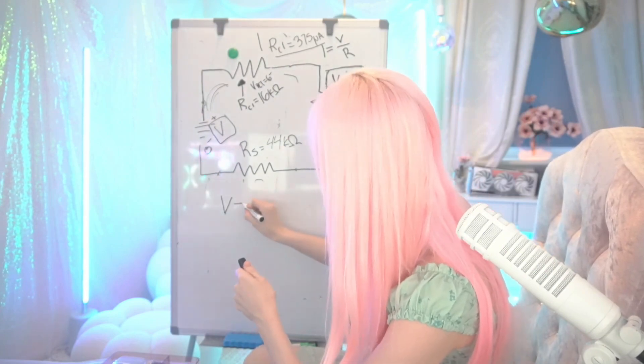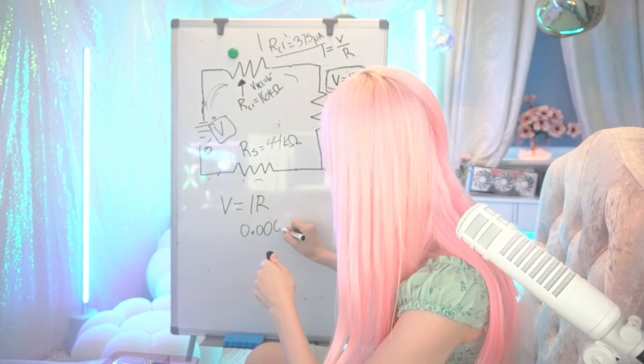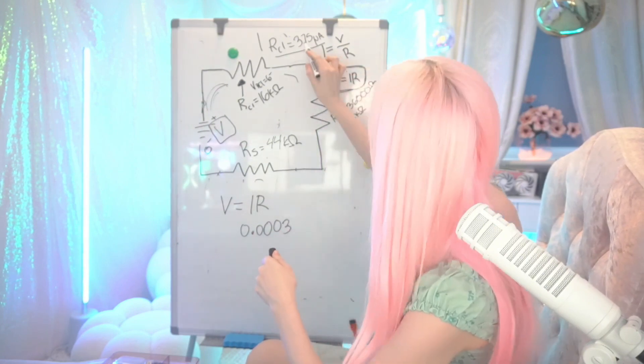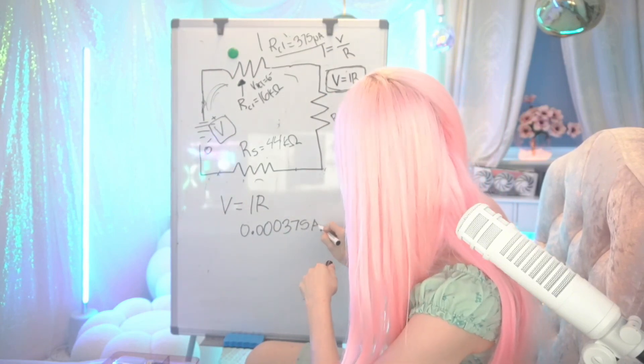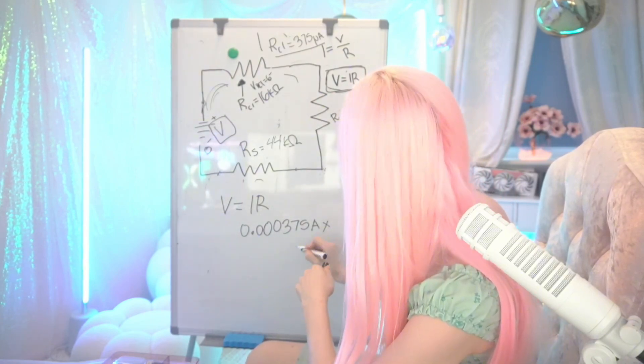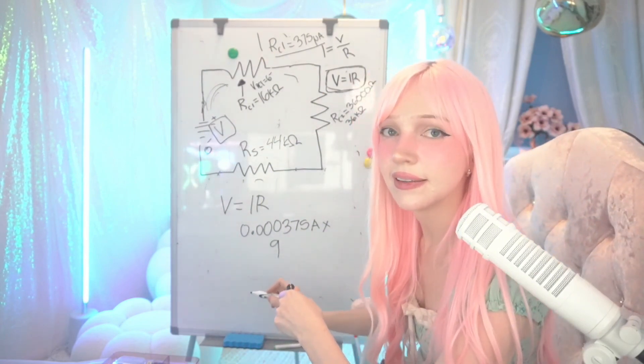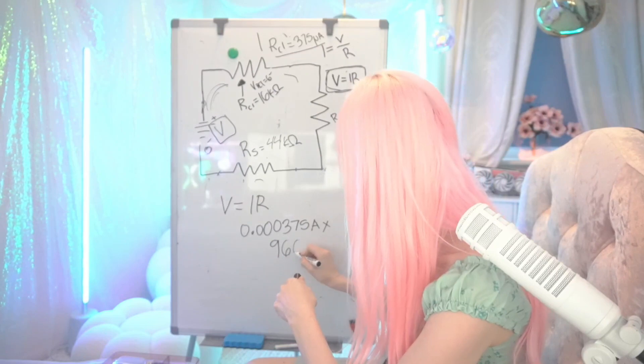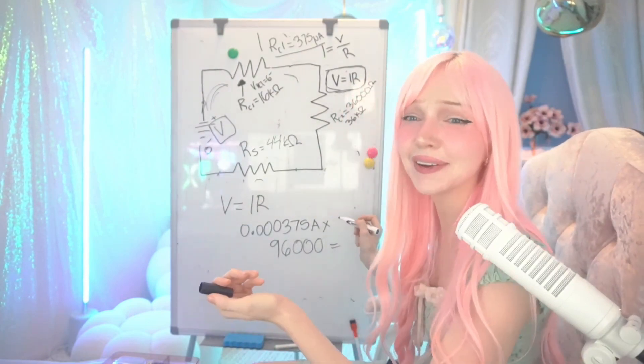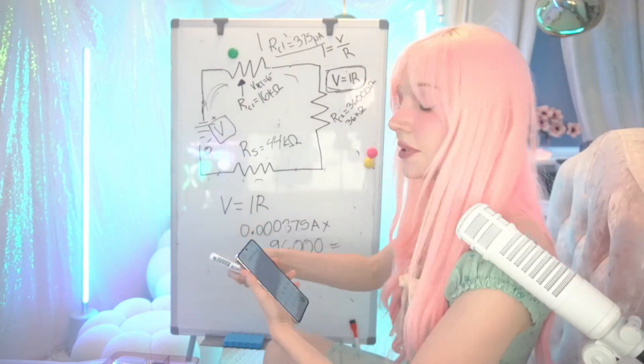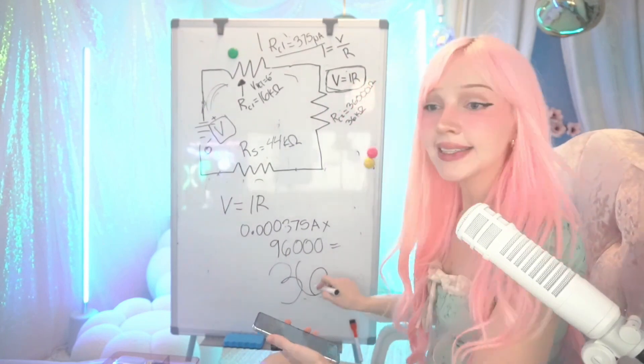V, our answer, this is what we're looking for, is IR. Our current is right here, 0.000375 amps, and then times our resistance, which was, I forgot our resistance was 96. Oh my gosh, I erased it, and now I forgot it.